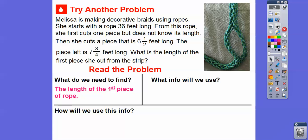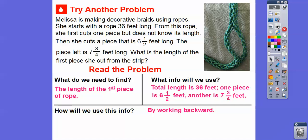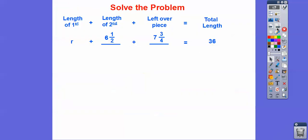What information are we going to use? We're going to use the total length is 36. One piece is 6 1⁄2 feet, and the other piece, the leftover piece, is 7 3⁄4 feet. So how are we going to use this information? We're going to work backwards. So here we go. So the length of the first piece of rope, and we'll just call it R, plus the length of the second piece, plus the leftover piece, and it totals 36. So now we'll work backwards.